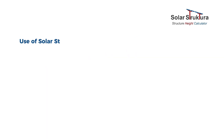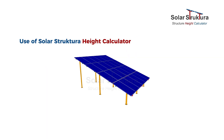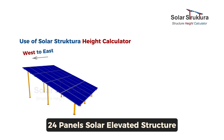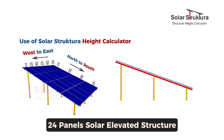Now we will use the tool and calculate the height of a 24-panel elevated structure. In this structure, the East-to-West direction has 6 panels and the North-to-South direction has 4 panels. We will calculate this North-to-South slope.